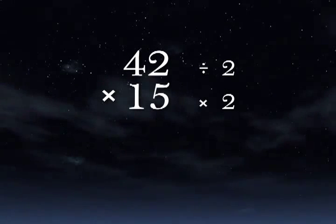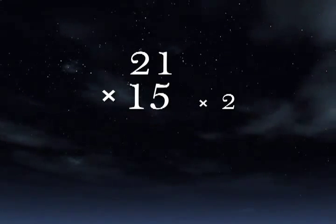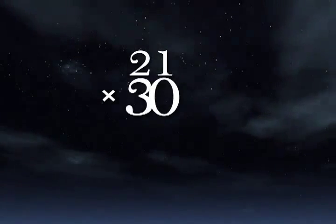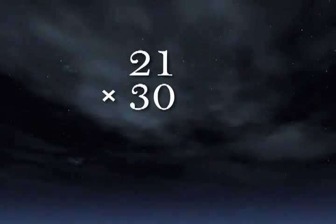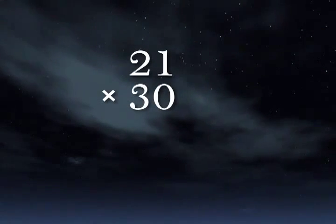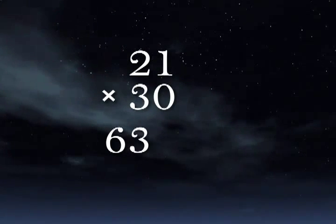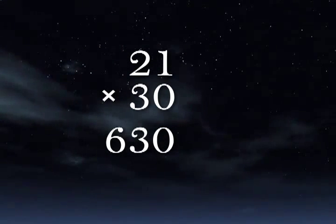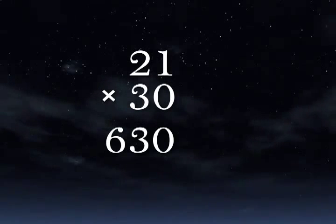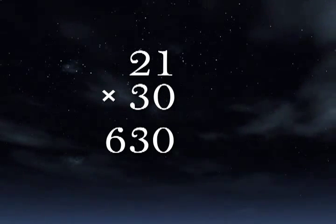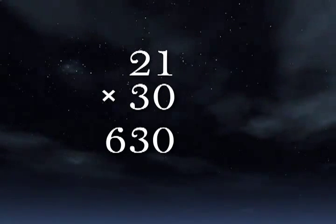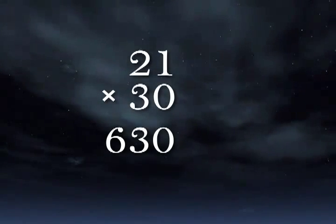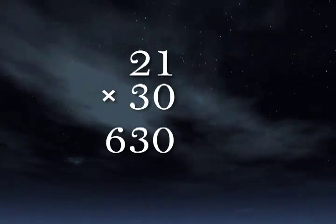Half of 42 is 21. Double 15 and you get 30. So the new problem is 21 times 30. 21 times 3 is 63. So 21 times 30 is 630. The half and double method is ideal for multiplying an even number times a number ending in 5. We're simply reframing the question in order to get easier numbers to use.